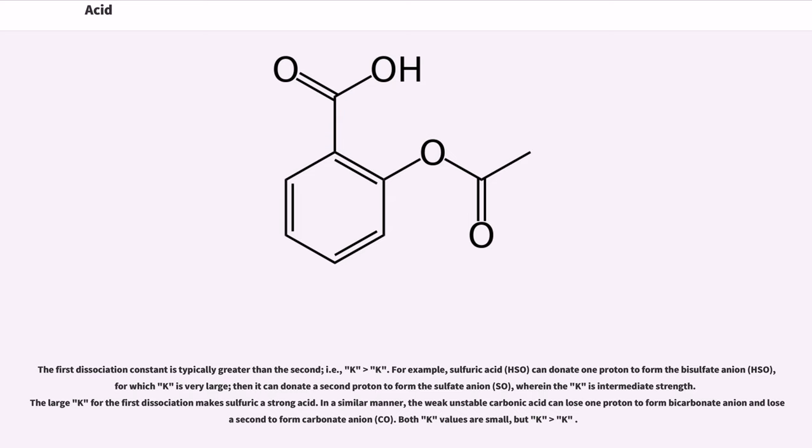For example, sulfuric acid (H2SO4) can donate one proton to form the bisulfate anion (HSO4-), for which Ka1 is very large, then it can donate a second proton to form the sulfate anion (SO4^2-), wherein the Ka2 is intermediate strength. The large Ka1 for the first dissociation makes sulfuric acid a strong acid.